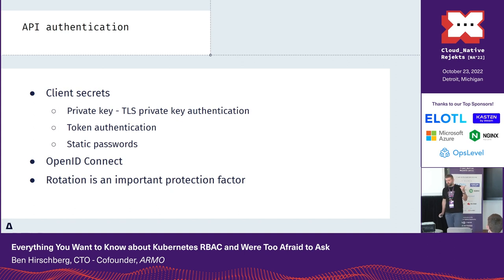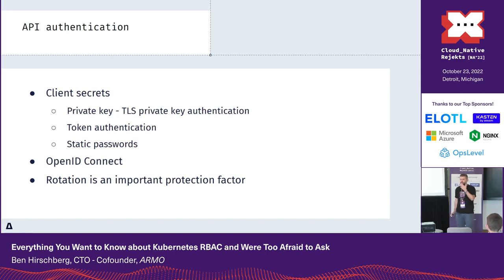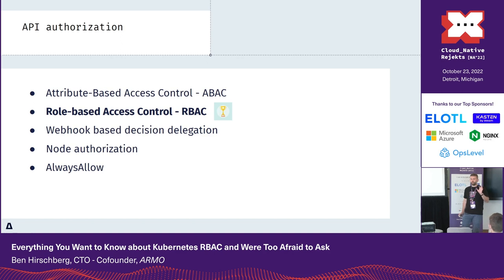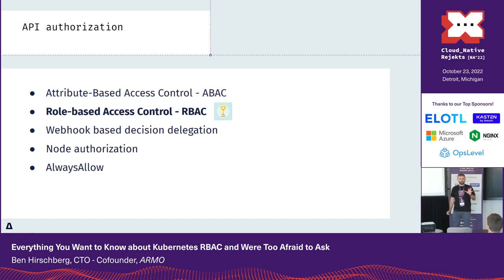One is mutual TLS — client authentication by a certificate and proving that you have the private key. When you're talking to the API server, you have to prove you have the private key connected to your certificate. The second is single-sided TLS from the API server side, where you provide a token connected to the OpenID protocol. In both cases, from a security perspective, it's very important to rotate keys.